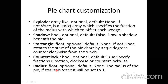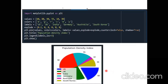radius lets you control the size of the pie chart. By default the radius is 1, but if you want a bigger pie chart you can increase it by passing a larger radius value inside the pie function.